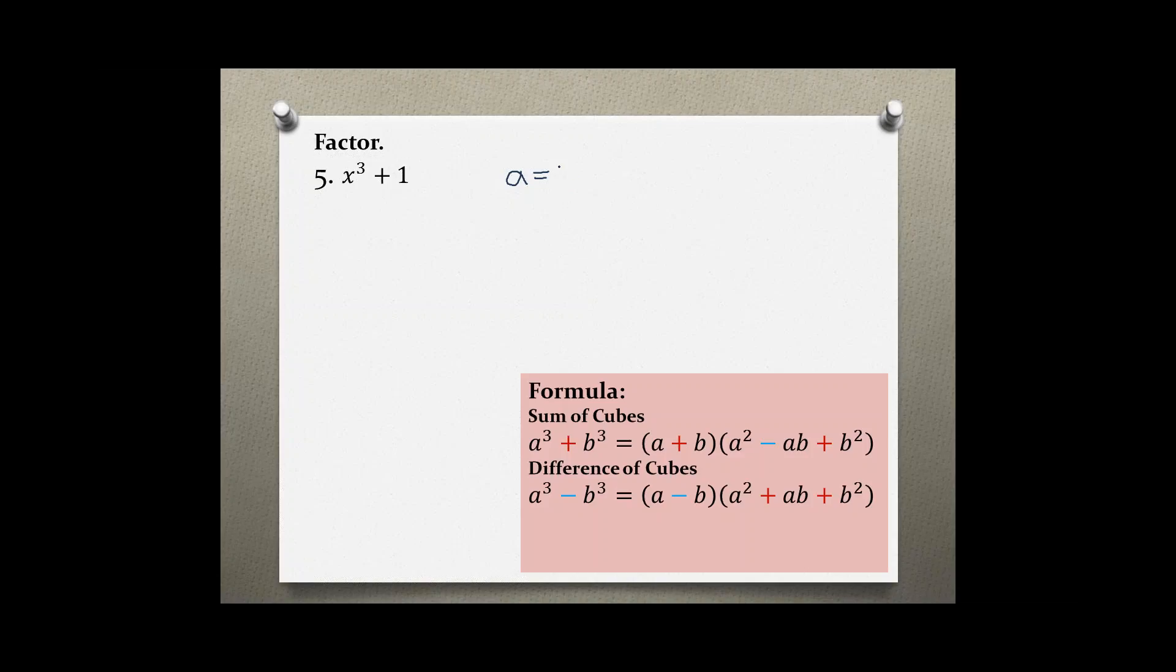So my A is just X and my B is just one because one times one times one is equal to one.